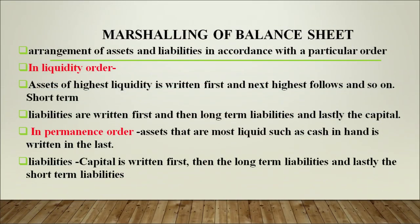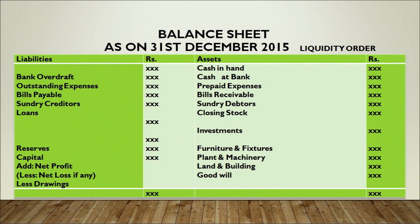Keep in mind learners that there are two orders which can be used. First is the liquidity order. The liquidity order clearly states that assets of the highest liquidity have to be written first. The highest liquidity assets are your current asset category. So the first and foremost item would therefore be cash in hand, followed by the next liquid current asset — cash at bank, followed subsequently by prepaid expenses, bills receivable, sundry debtors, closing stocks, short term investments, furniture, fixtures, plant and machinery, land and building, and goodwill. If you look at the right hand side of this format, after cash in hand and cash at bank, I have placed prepaid expenses.